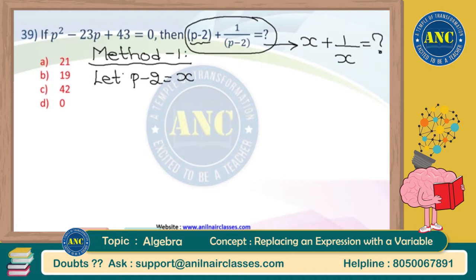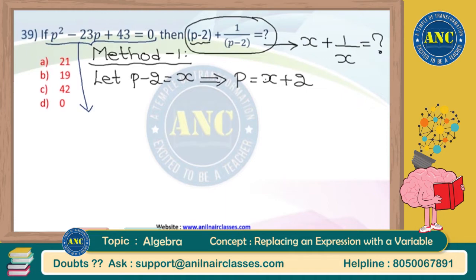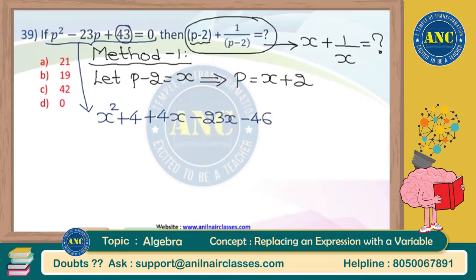If p - 2 = x, then p = x + 2. Substituting into the quadratic: p² becomes (x + 2)² = x² + 4 + 4x, and -23p becomes -23(x + 2) = -23x - 46. So the equation becomes x² + 4x - 23x - 46 + 43 = 0.